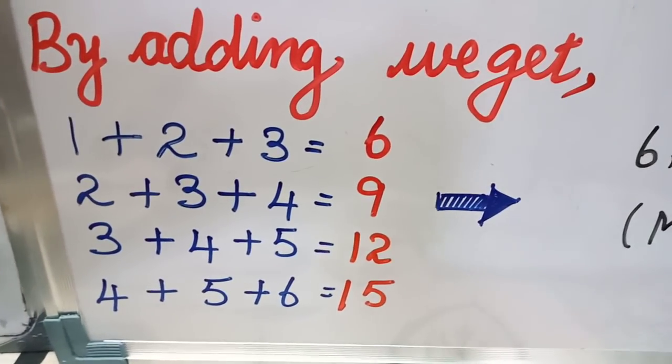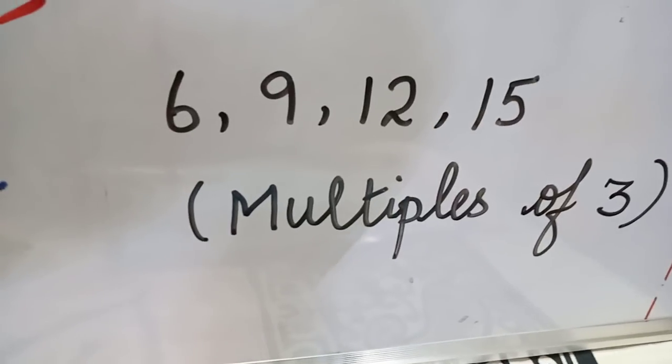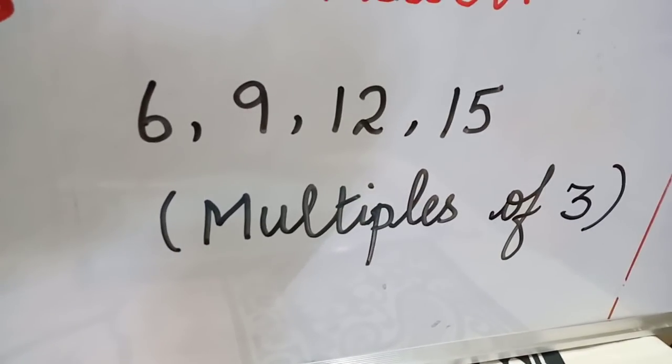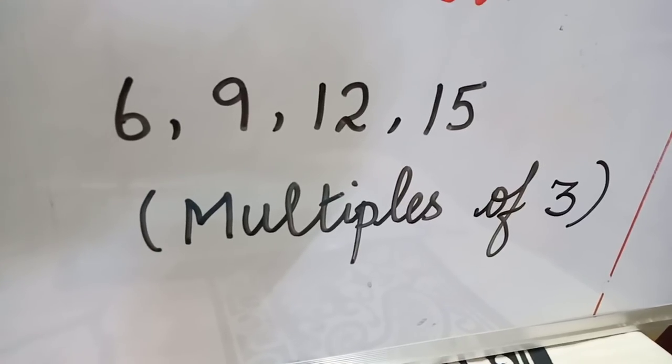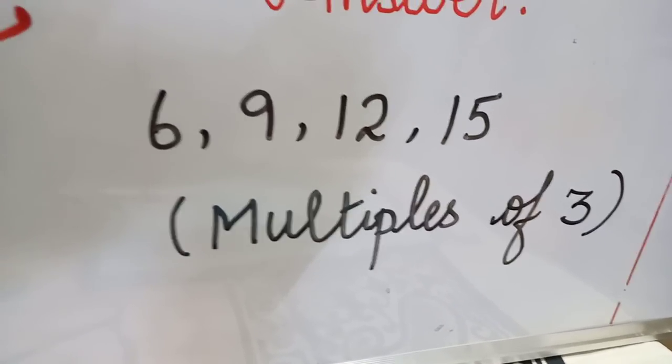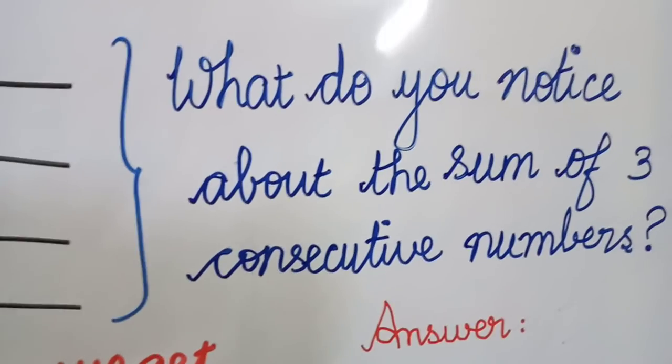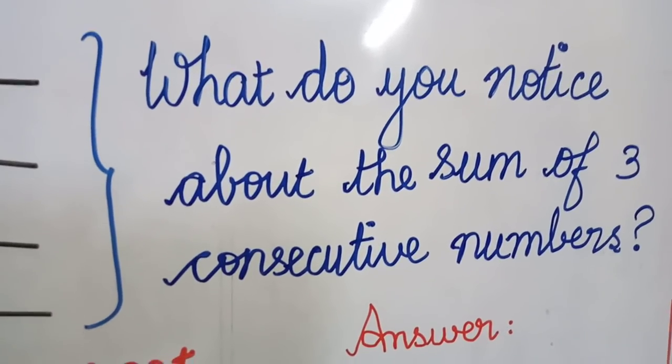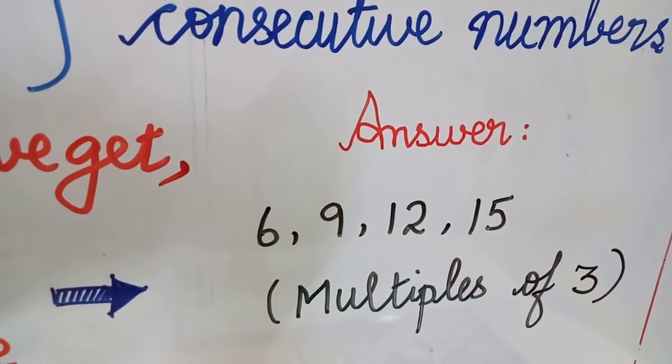And what do you observe in these numbers? And we find that these numbers 6, 9, 12, and 15 are all multiples of 3. Isn't it so? Yes. So your answer: the sum of 3 consecutive numbers are 6, 9, 12, and 15, and they follow a pattern of multiples of 3.